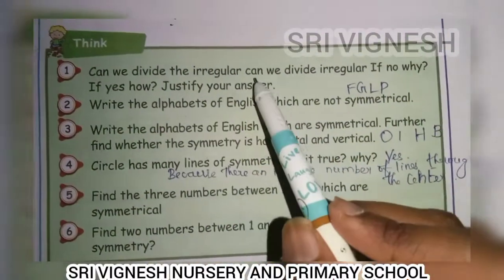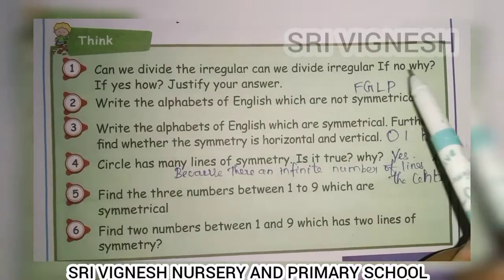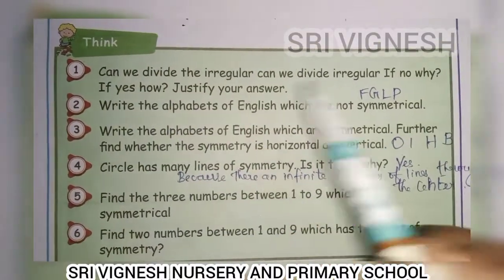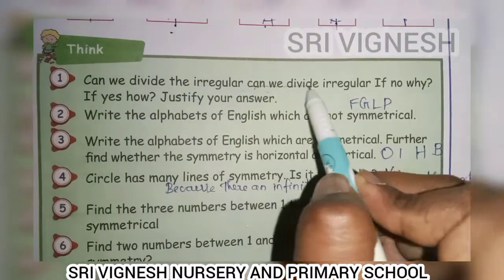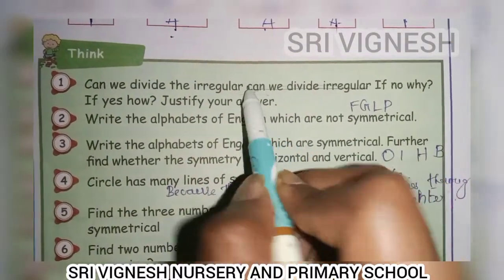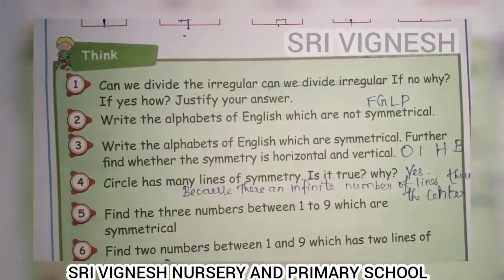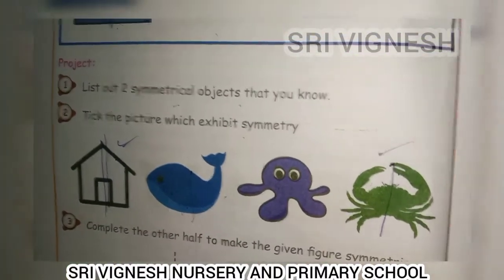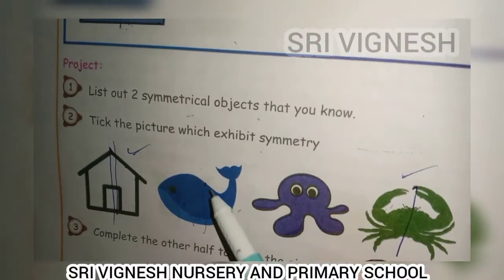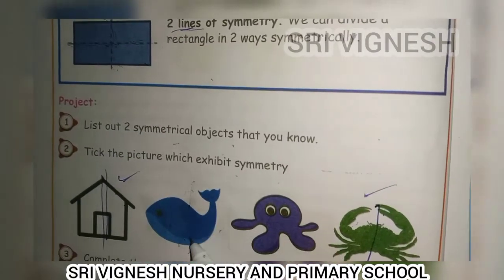Next, can we divide the irregular shape? Can we divide an irregular shape into symmetry? If no, why? If yes, justify your answer. This is a fish — it's not symmetry. It's not a natural symmetry. So if you draw any lines, it's not symmetry. Irregular shapes cannot be divided into symmetry.